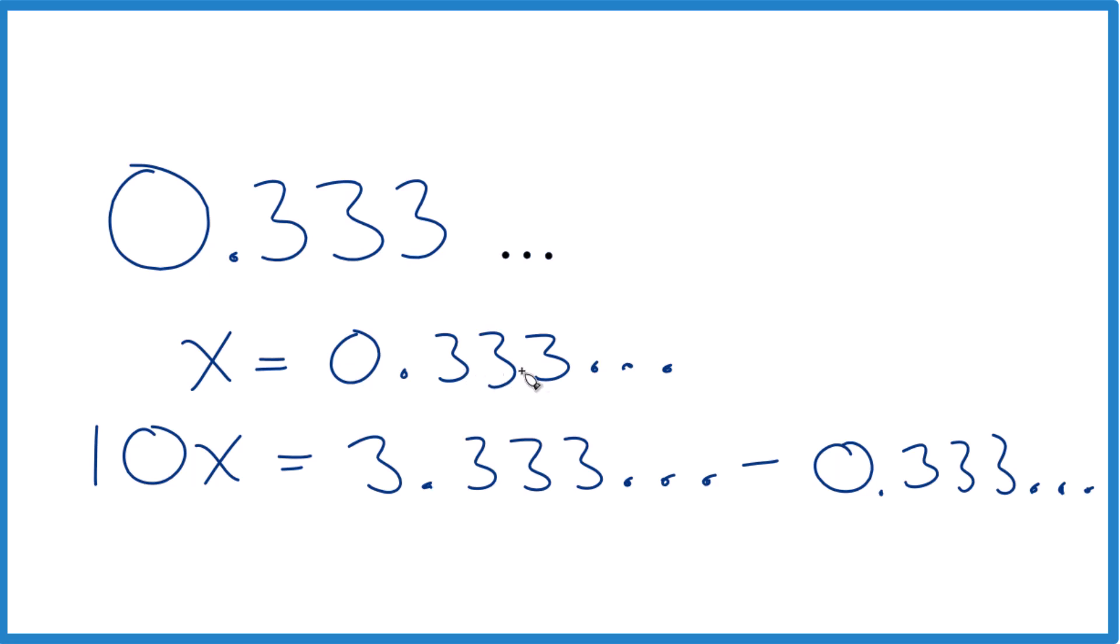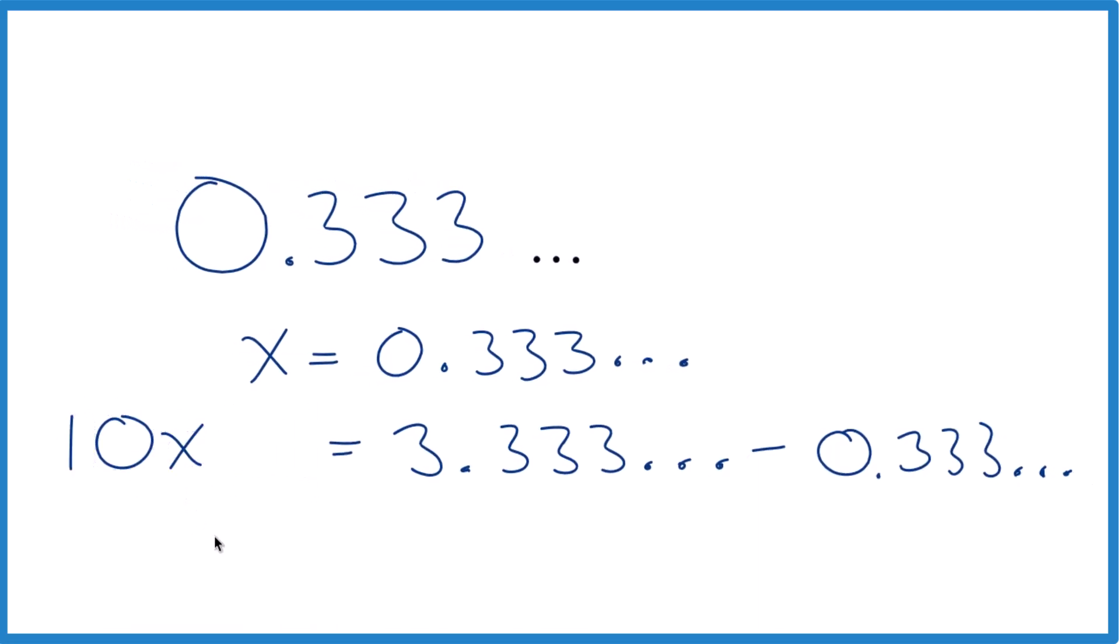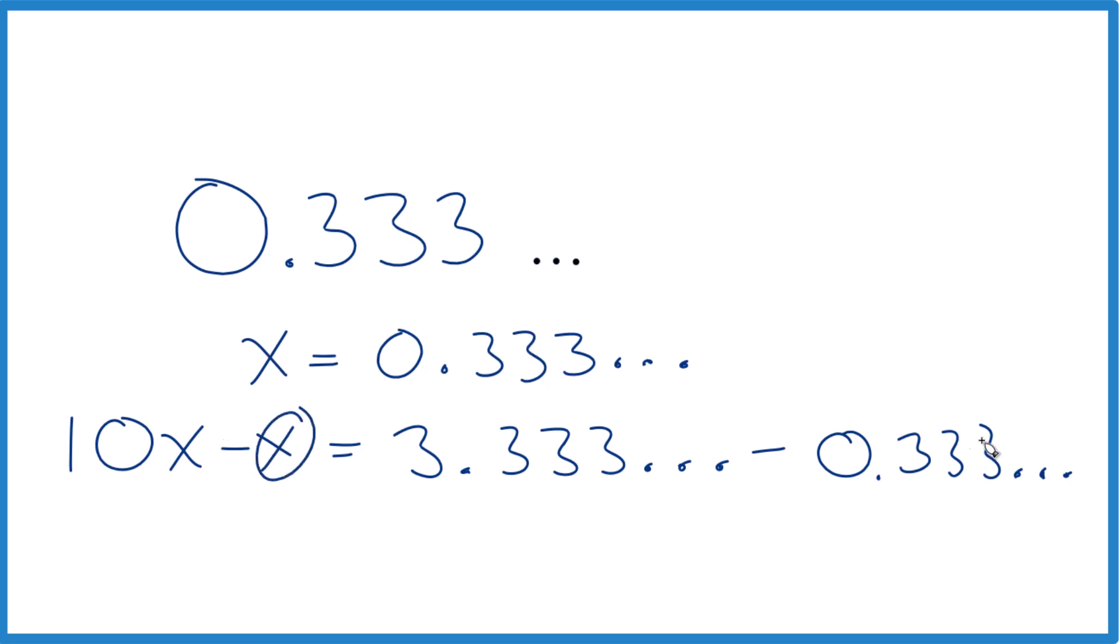0.333 dot dot dot, that equals x. So what I could do over here, let's move this over a little bit. I could just say 10x minus x, because x, that's equal to this number here. So these two things here, they're equal. Since it's algebra, I can do that.